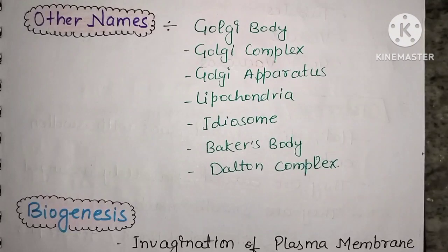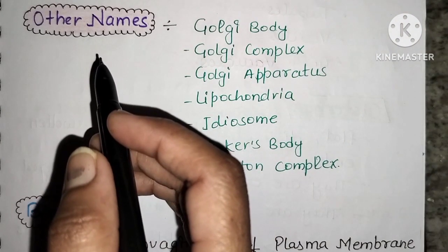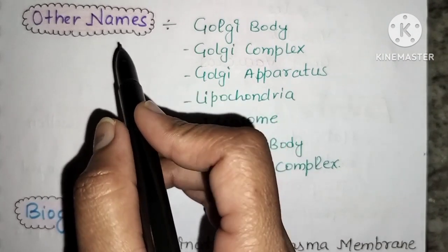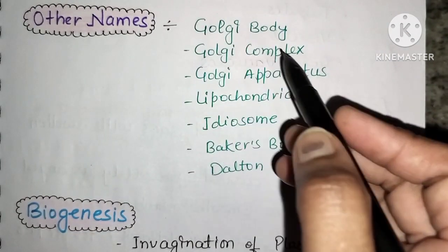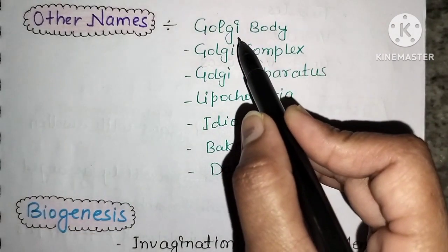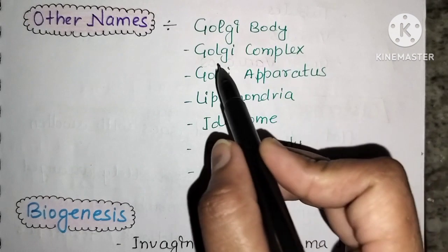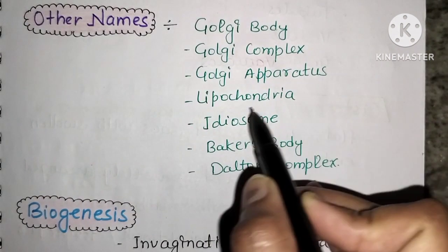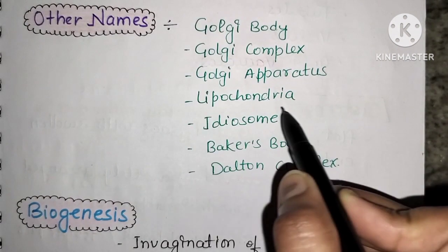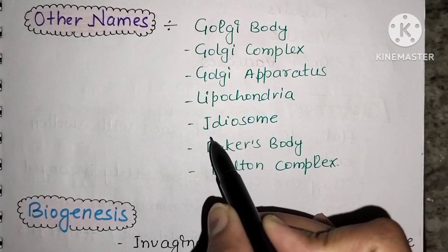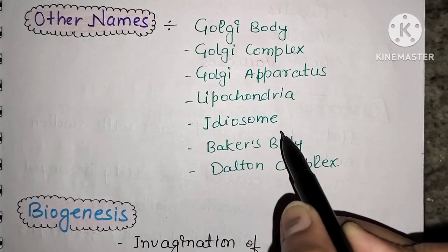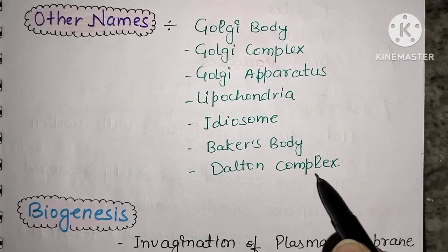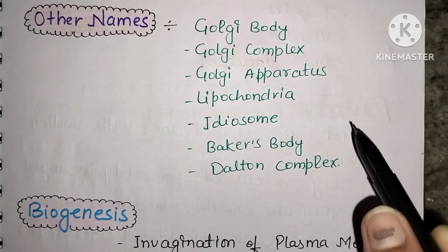The Golgi apparatus has many other names, such as Golgi body, Golgi complex, Golgi apparatus, lipochondria, idiosome, Baker's body, and Dalton complex. So if you see any of these names in an exam question, they all refer to the Golgi apparatus.